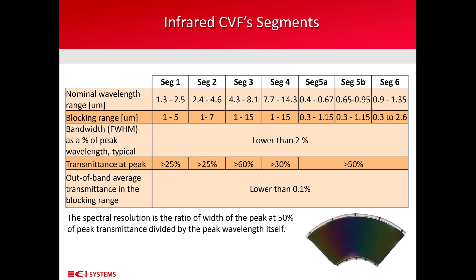This slide shows a list of all the segment types developed by CI in the last couple of years. There are six segments covering the whole range from 0.4 microns to 14.5 microns. Segments 5A, 5B, and 6 cover the visible to near-infrared range. And segments 1, 2, 3, and 4 cover the range from 1.3 to 14.3 microns.